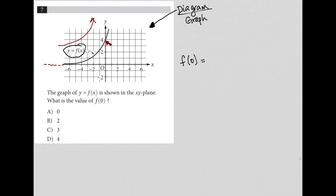So f of 0 is the same as saying, what does y equal when x equals 0? That is the question. What does y equal when x equals 0? That's the translation of what f of 0 truly means.